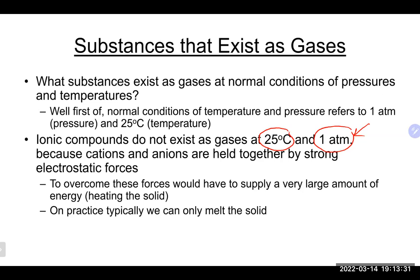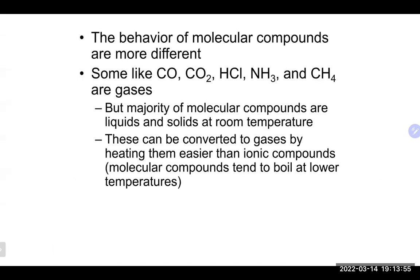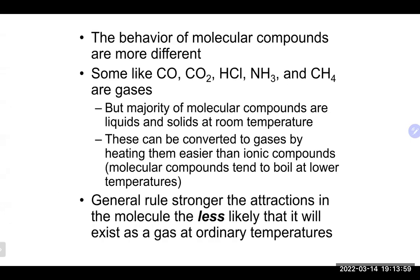You would have to put a ton of energy in to get ionic compounds to evaporate — it doesn't really happen under normal conditions. What typically happens is they will just start to melt before going into the gas phase. So we don't typically see ionic compounds as gases under normal conditions. Now, covalent compounds or molecular compounds — where we have sharing of electrons, non-metals with non-metals — we do see them exist as gases. Things like carbon monoxide, carbon dioxide, hydrogen chloride, ammonia, methane, and also hydrogen gas, nitrogen gas, oxygen gas, chlorine, and fluorine are gases under normal conditions.